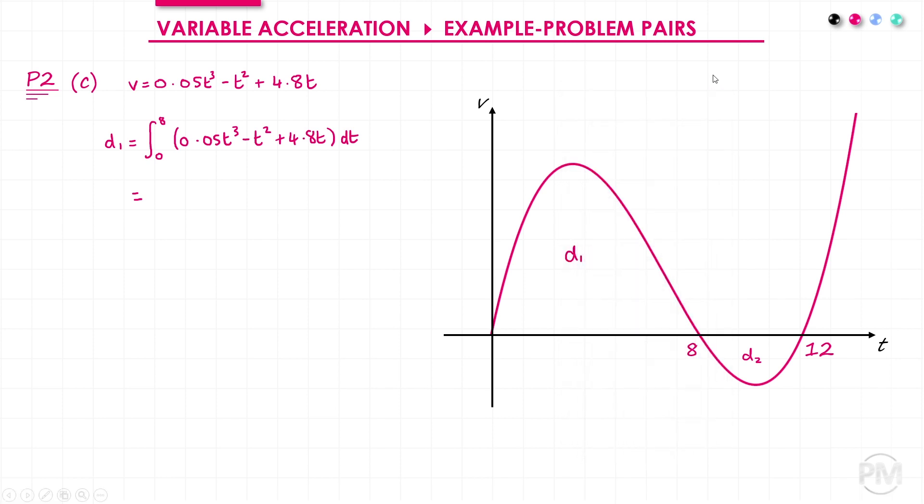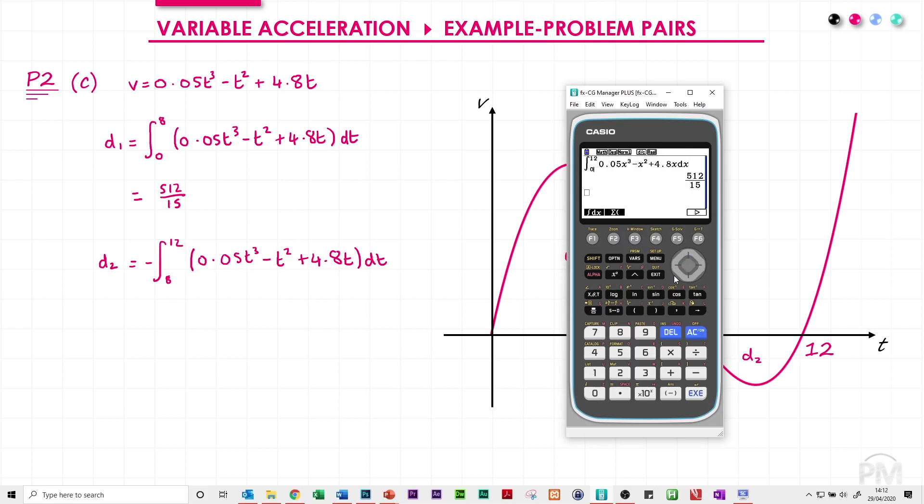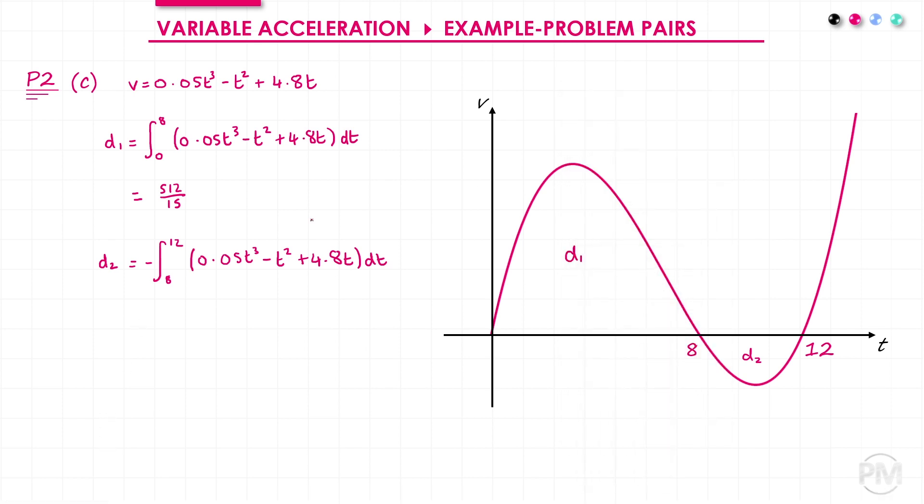For D2, I can anticipate that the integral would give me a negative answer, and I want the magnitude. And so I can do minus the integral between 8 and 12. The integral gives me minus 16 thirds. So, my answer is just positive 16 thirds. So, the total distance is 512 over 15 plus 16 thirds.